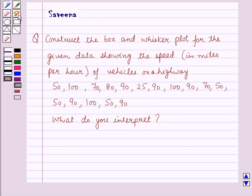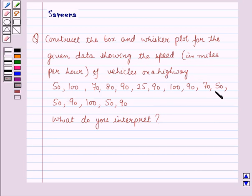Hello and welcome to the session. In this session we will discuss a question which says: construct the box and whisker plot for the given data showing the speed in miles per hour of vehicles on a highway.